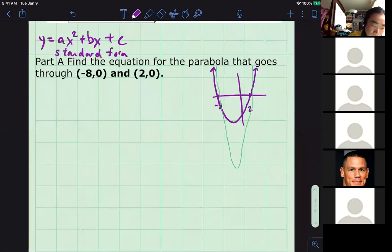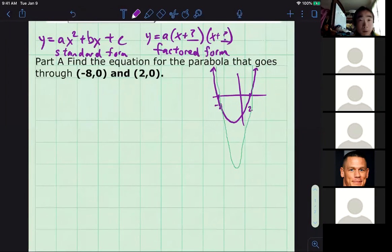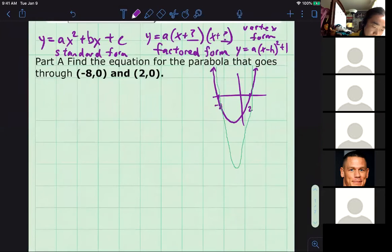And then we have factored form y equals a times (x plus something) and then (x plus something else). This is called factored form. We worked a lot with that in chapter 8, part 1. We all worked on factoring, drawing our box, drawing our diamond, figuring out the sidelines.